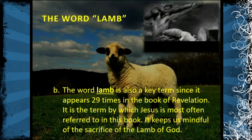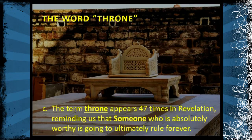John the Baptist said, 'Behold, the Lamb of God who takes away the sins of the world.' In the Old Testament, Jesus was spoken of as the Lamb. This is a title used throughout the whole Bible to refer to Jesus. The term throne appears 47 times in Revelation, reminding us that someone who is absolutely worthy is going to ultimately rule forever.